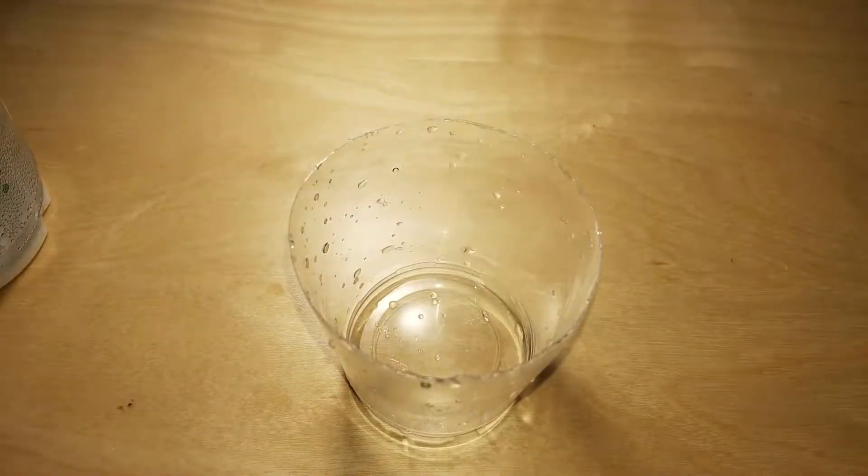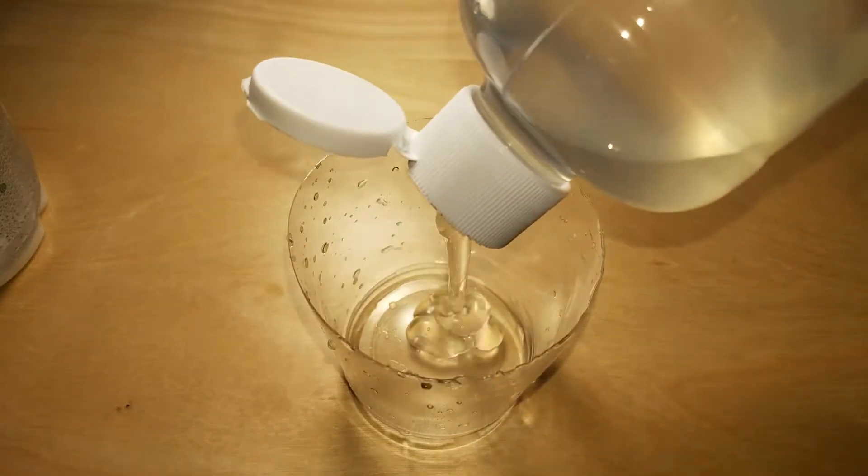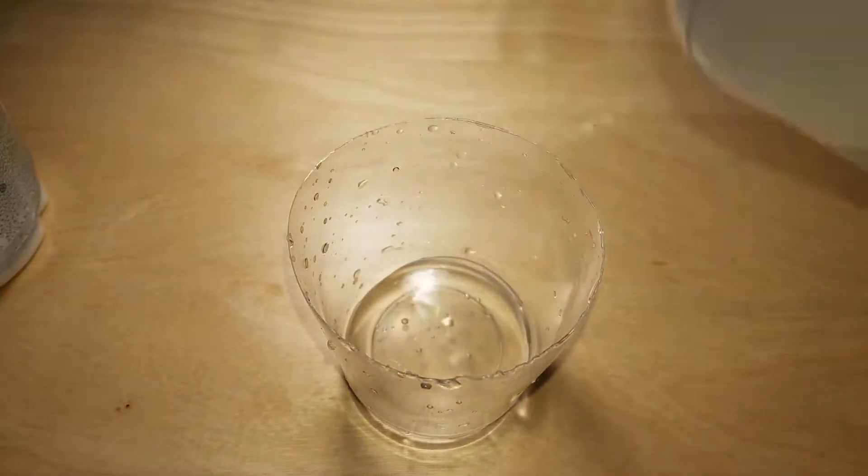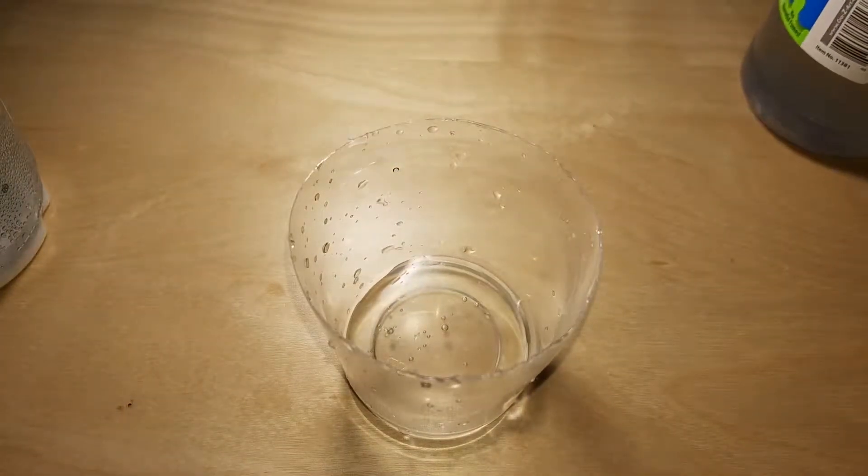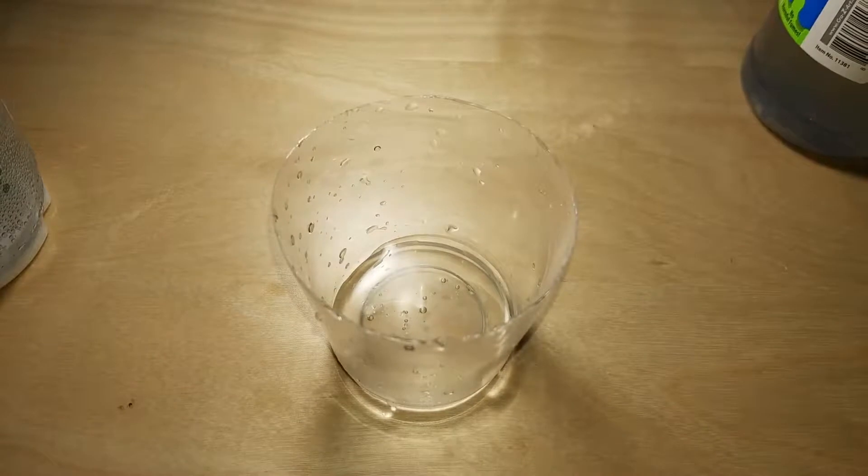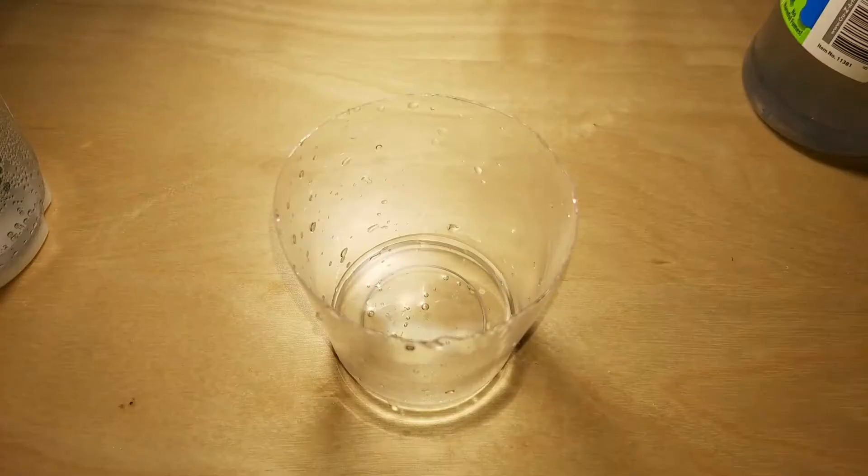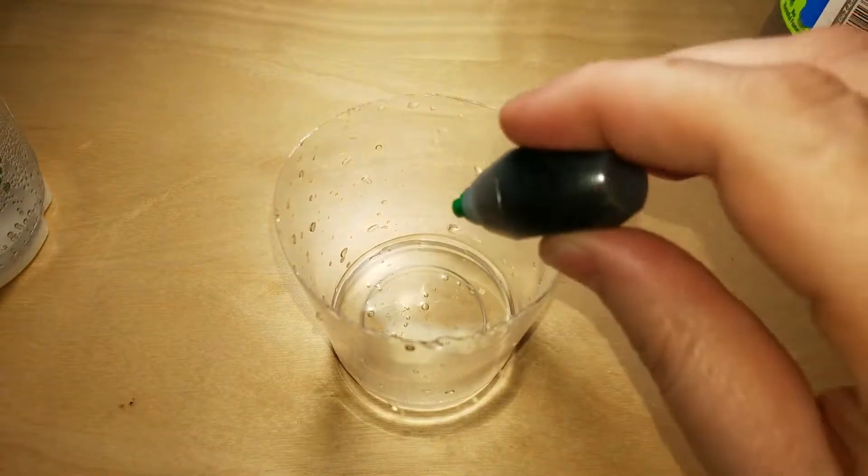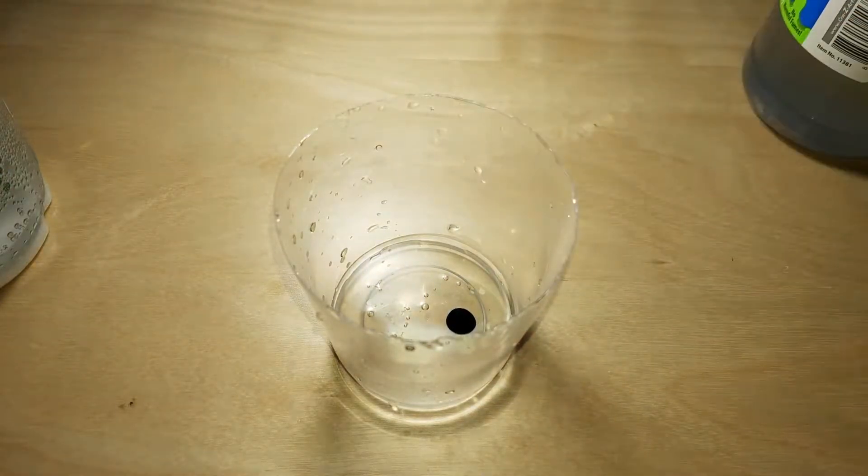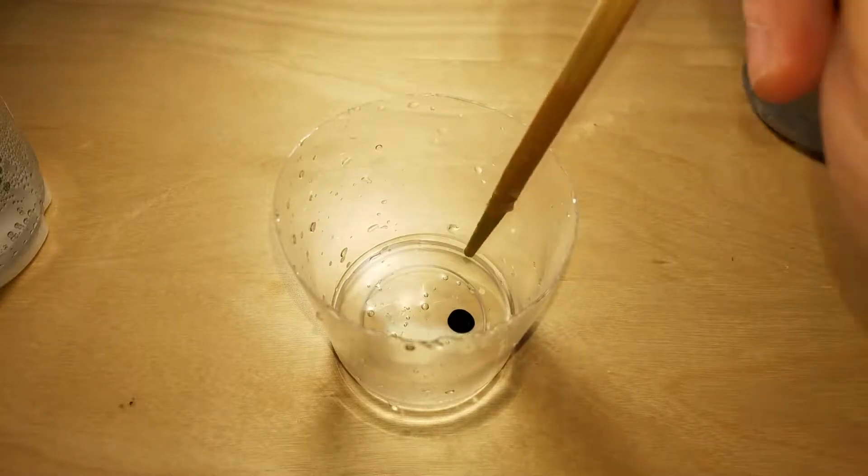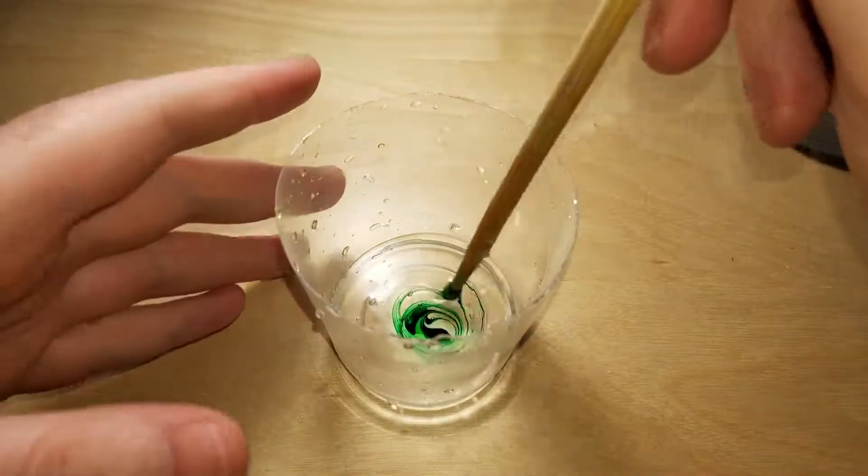First up is regular baking soda on its own, but I'm going to add some green food coloring. So green will be the color of the mixture with just baking soda, or just powder.